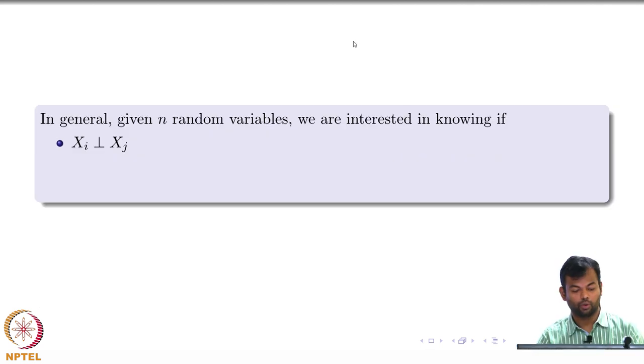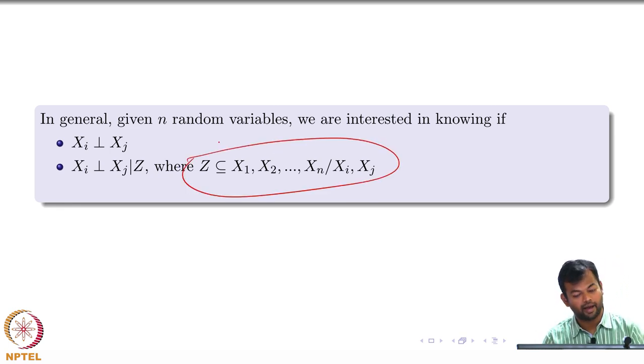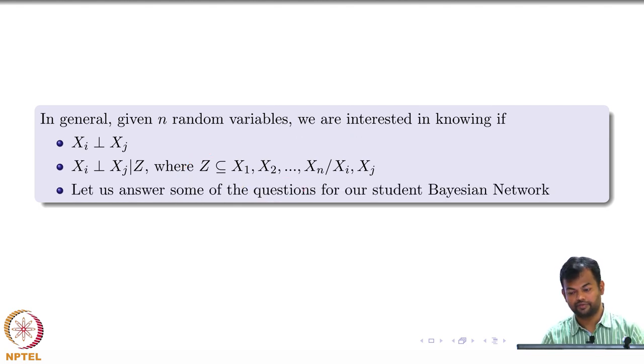So we will just go over the actual questions that we are interested in this module, which is, given n random variables, we are interested in knowing if x_i is independent of x_j, or if x_i is independent of x_j given z, where z could be a set of random variables from your n random variables. So z could be the remaining n minus 2 random variables. So let us answer some of these questions for our Bayesian network.